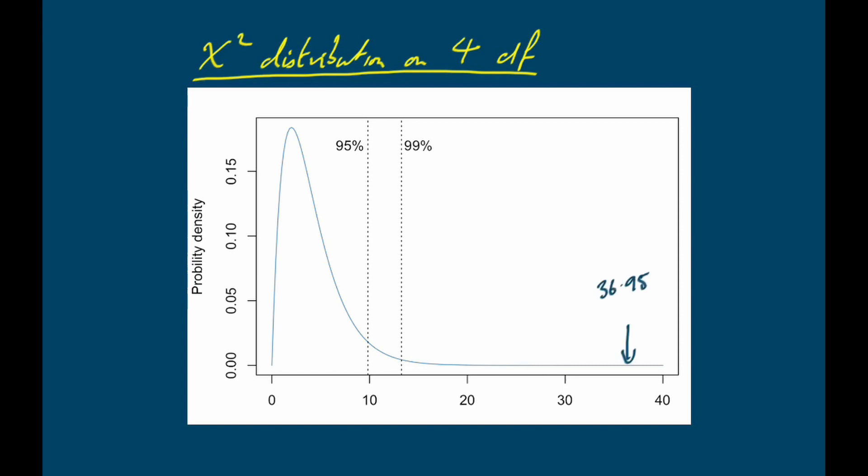Our calculated value of 36.95 sits far out on the tail of the distribution. The probability of getting a value of 36.95 or bigger if the null hypothesis of no association between the variables were true is going to be a very small number indeed — much smaller than 0.01. Given that 0.05 is our conventional statistical cutoff for significance, our chi-square test is telling us that we have a statistically significant deviation from the null hypothesis of no association between smoking and lung cancer in the dataset that Doll and Bradford Hill published.